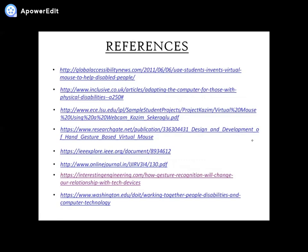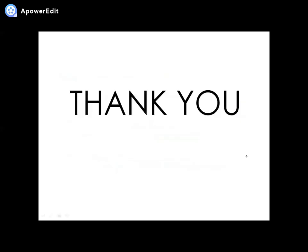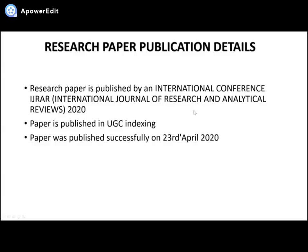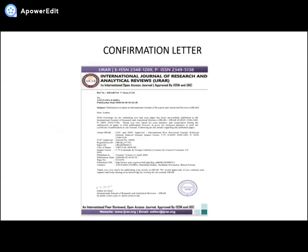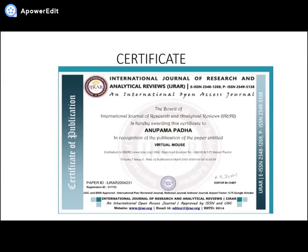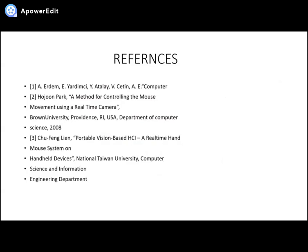There are some references. Thank you. Shriya Burman, sharing the details of the research paper. Our research paper is published by an international conference, IJRAR — the International Journal of Research and Analytical Reviews — under UGC Indexing. It was published successfully on 23rd April 2020. This is the confirmation letter and certificate of the research paper being successfully published. These are the references we referred to during the making of the research paper. Thank you.